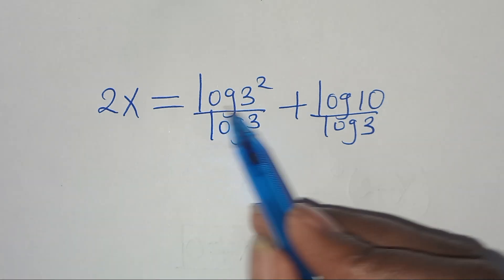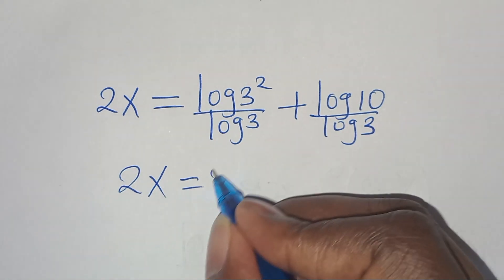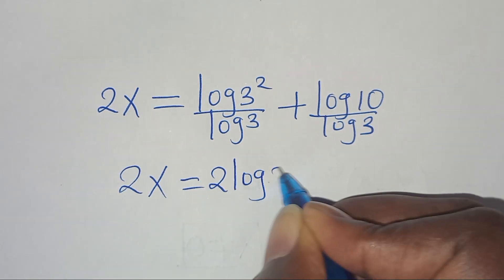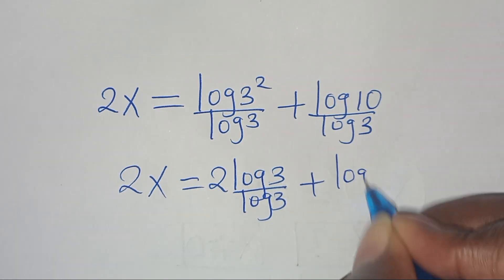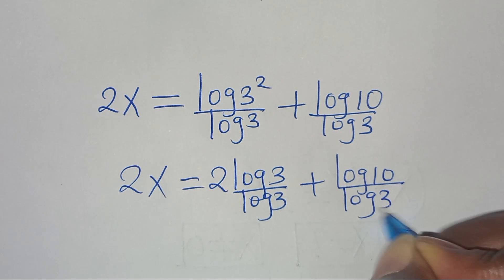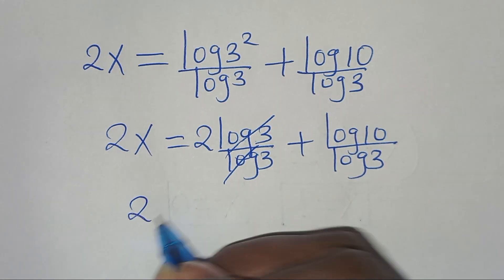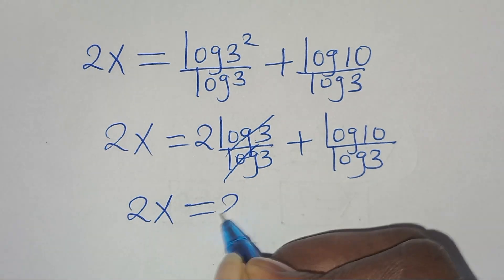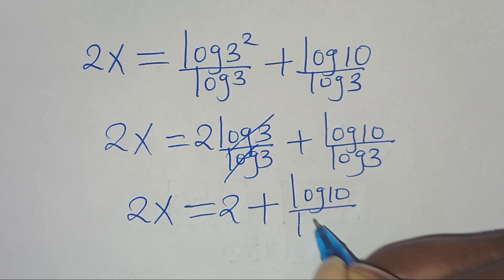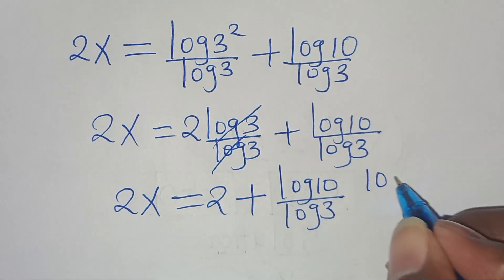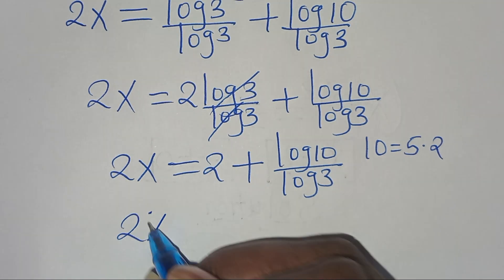Applying the power property, log(3²) becomes 2·log 3. So 2x equals 2·log 3 divided by log 3, plus log 10 divided by log 3. The log 3 terms simplify, so now we have 2x equals 2 plus log 10 divided by log 3.